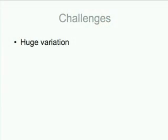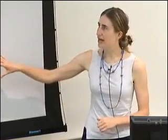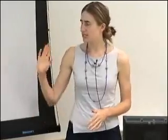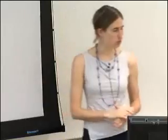Now, why might this be hard? First of all, there's a huge variation in the number of ways you could describe a particular physical path. Take this picture — it's from one of the spaces in the MIT Computer Science Building. You can see a microwave and a fridge — I would call this a kitchen or kitchenette. One person might say go past the microwave, another might say go past the kitchen, and someone else might just say go straight because there's nowhere to turn.